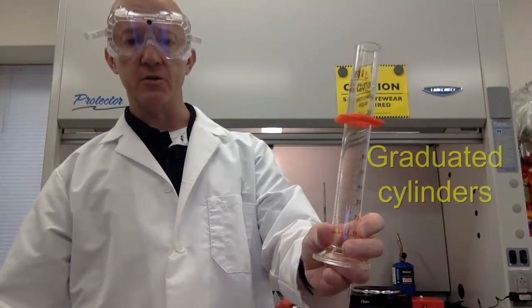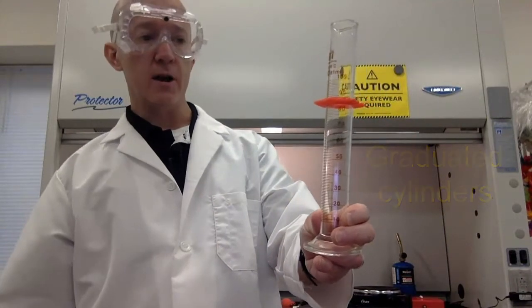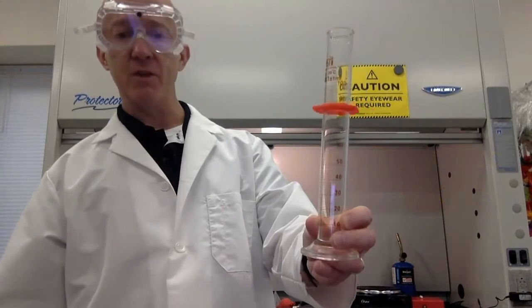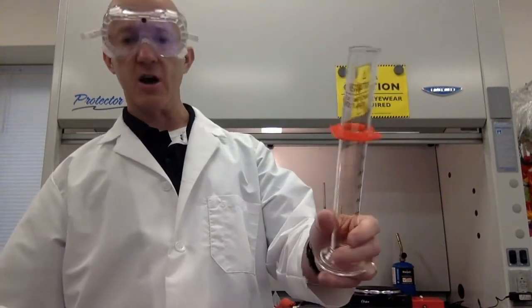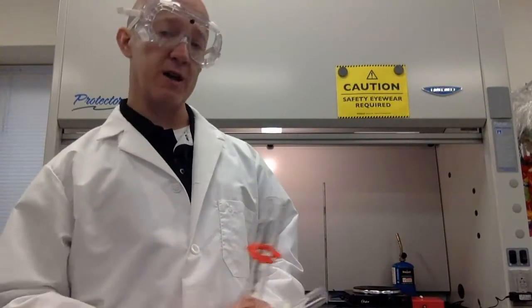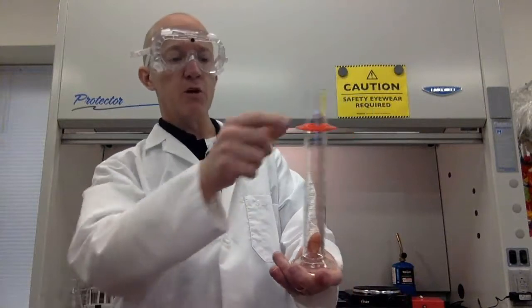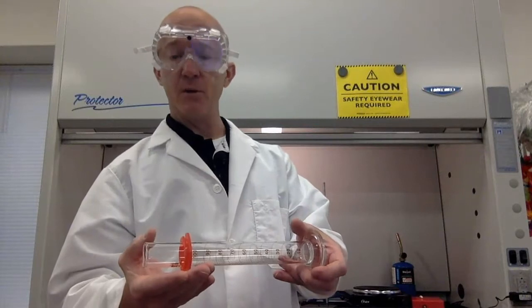These are called graduated cylinders. Graduated because you'll notice the lines all the way up. They give very accurate measurements of volumes. You have them in varying sizes. This one has a 100 milliliter capacity. This one has a 50. There are smaller ones. We have 25s and 10s. If you're wondering about this plastic ring right here, that's to help the graduated cylinder from breaking if it happens to tip over.